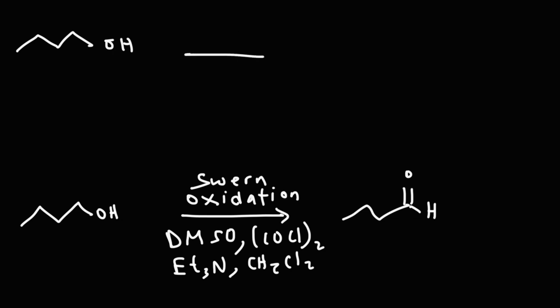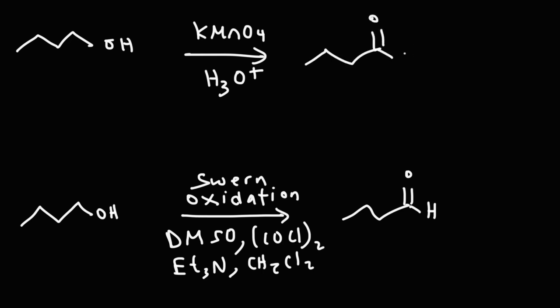If we take 1-butanol and react it with potassium permanganate under acidic conditions, this is a very strong oxidizing agent — it's going to oxidize the primary alcohol all the way to a carboxylic acid. There are also other reagents to be familiar with, like the Jones reagent and the Collins reagent, which are also oxidizing agents.